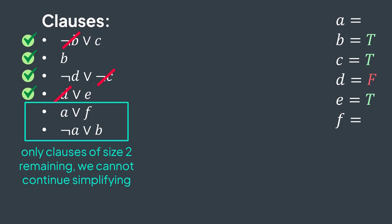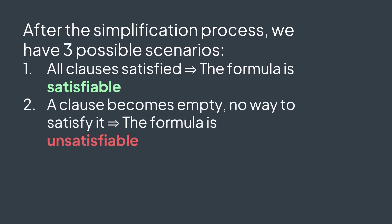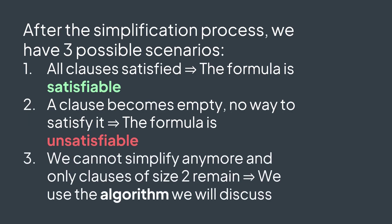In general, after this simplification process, we have three possible cases. Either all clauses have been satisfied, in which case we deduce the formula is satisfiable; or a clause becomes empty, meaning there is no way to satisfy it, so the formula is not satisfiable; or we cannot simplify anymore and we still have clauses of size 2 only, in which case we use the algorithm we will discuss to check if the formula is satisfiable or not.